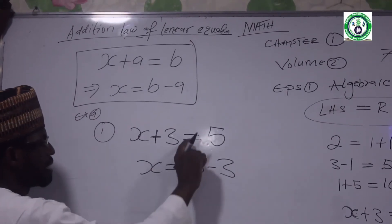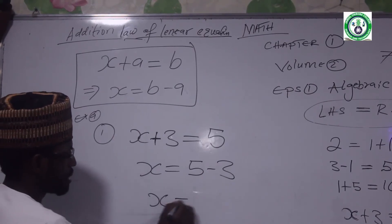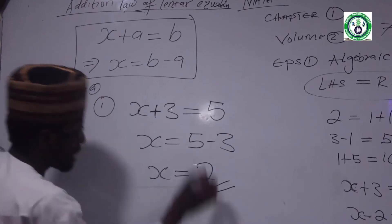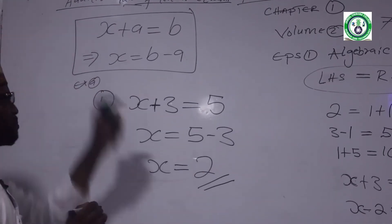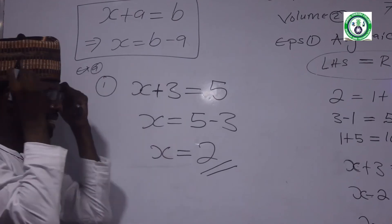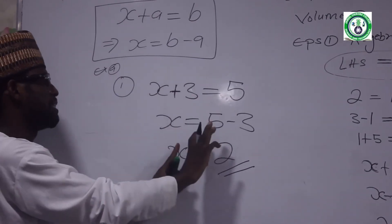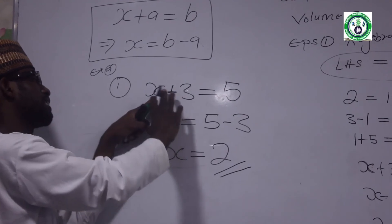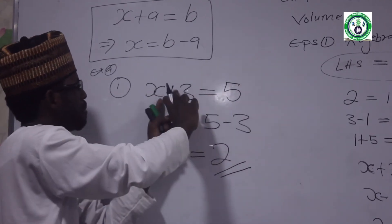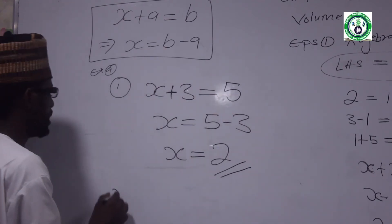Plus 3 becomes minus 3. X is equal to 5 minus 3. 5 minus 3 — so the answer is 2. Because if I add 3 to 2, I get 5. That confirms the answer. The next example: if it has a plus, it becomes minus.